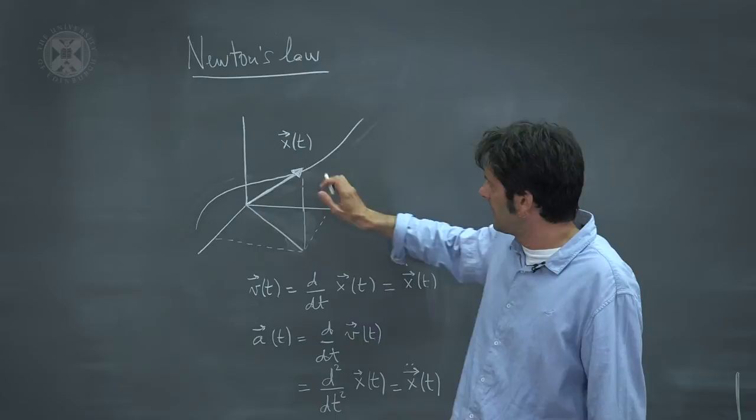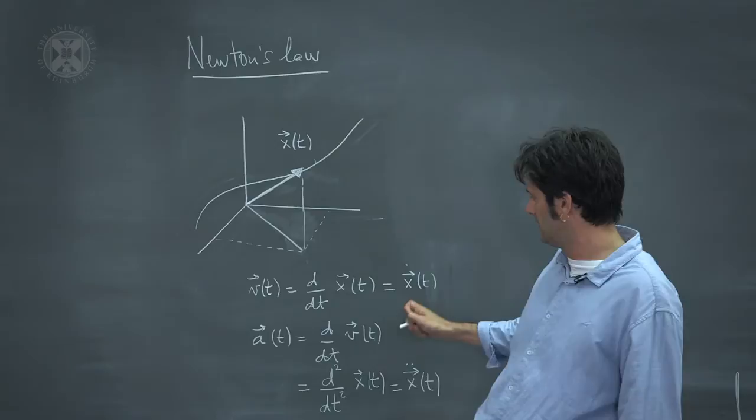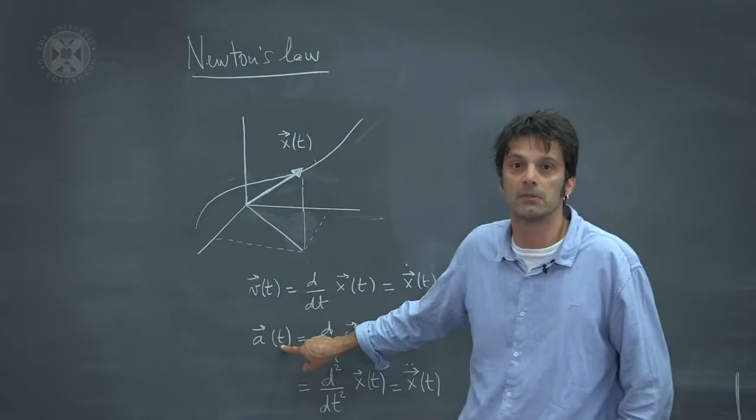As the position varies in time, we can define the velocity of the system, which is the rate at which the position is changing as a function of time. This is sometimes denoted as x dot. We can also look at the rate at which the velocity is changing as a function of time, and this is what we usually call the acceleration, or x double dot.